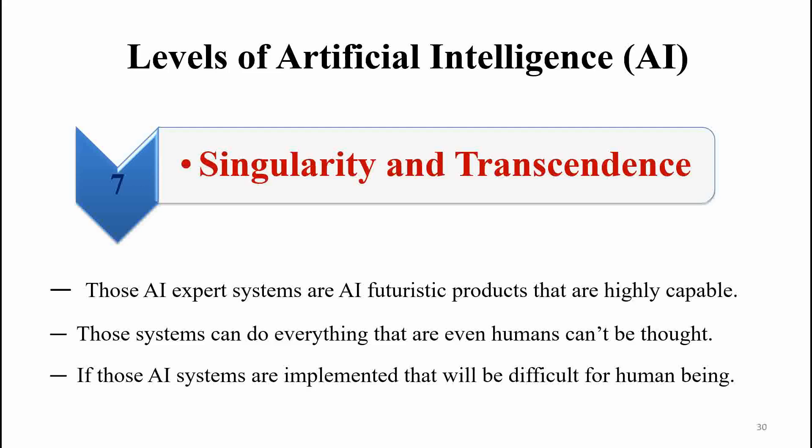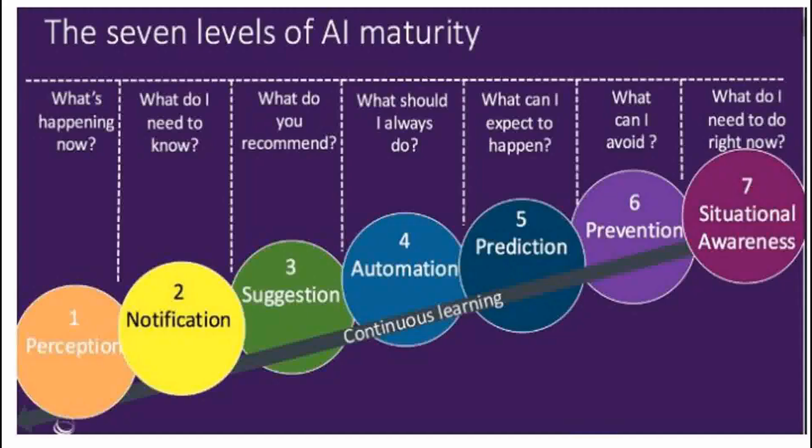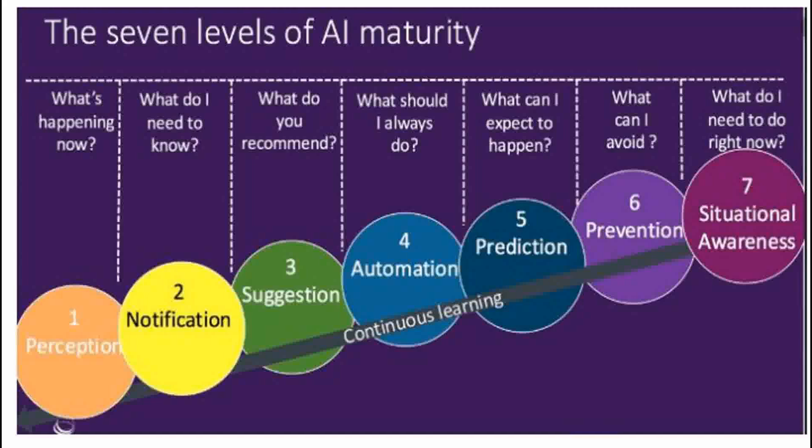Those are all seven levels or seven stages of artificial intelligence. The seven limbs of AI maturity — stage one is perception. Perception means understanding the environment, like understanding what is happening in our surroundings. The first label is about notification — if something happens, they will notify you about what you need to know based on the situation.